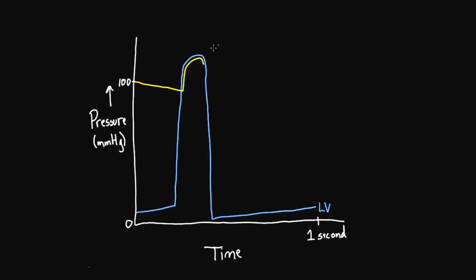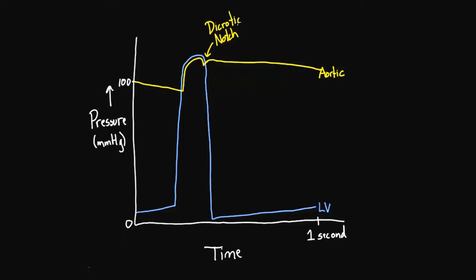The aortic pressure goes for a nice ride with the left ventricle, and then at some point the aortic pressure actually exceeds the left ventricle pressure. That's because of the compliance of the aortic walls, and you get what we call a dicrotic notch. So that's what the aorta is doing — that's our aortic pressure curve, and that little feature is our dicrotic notch.